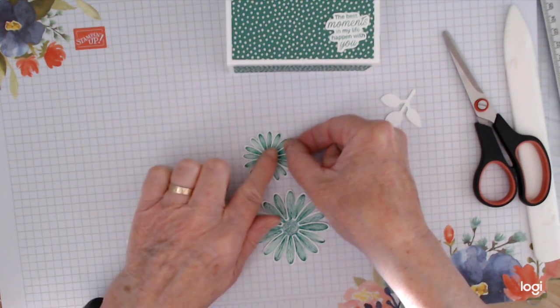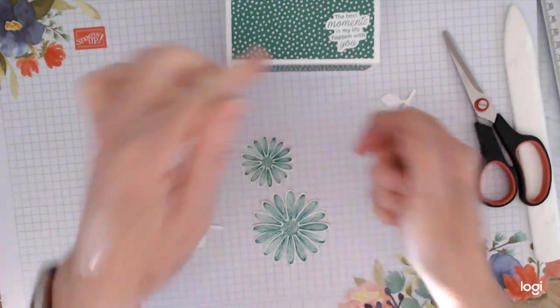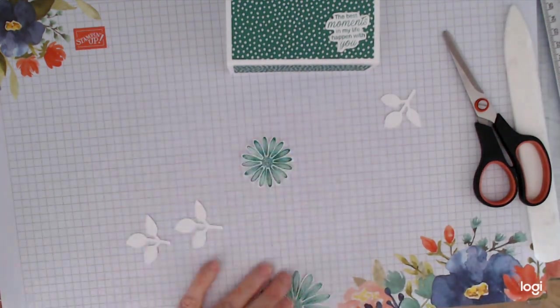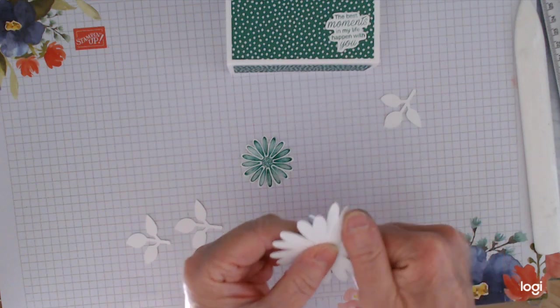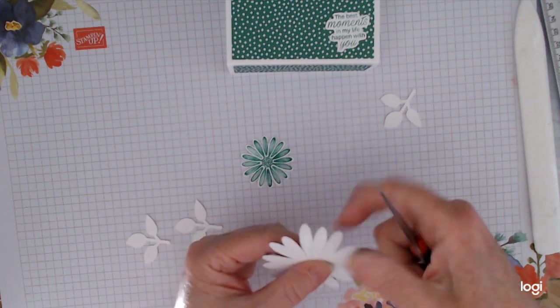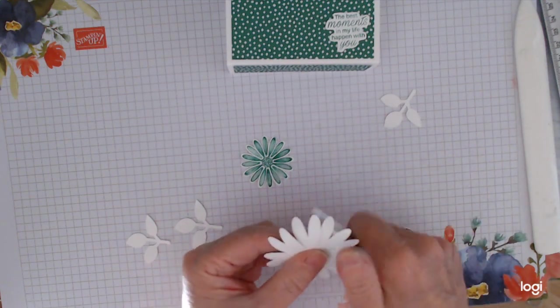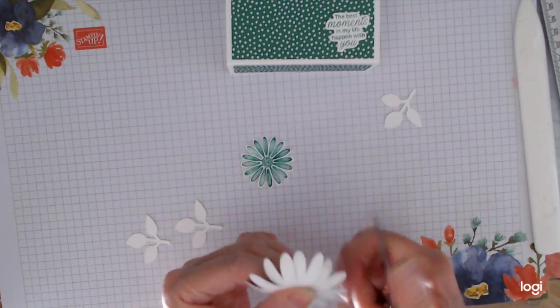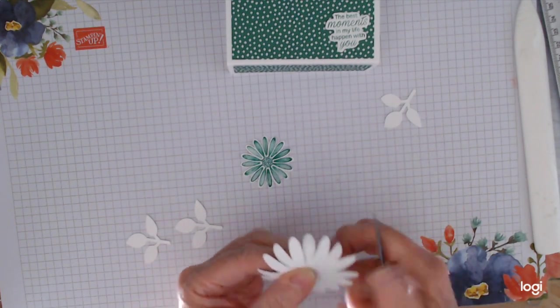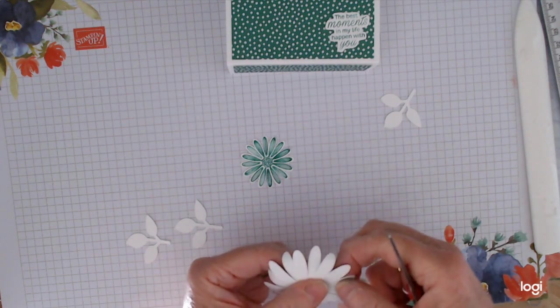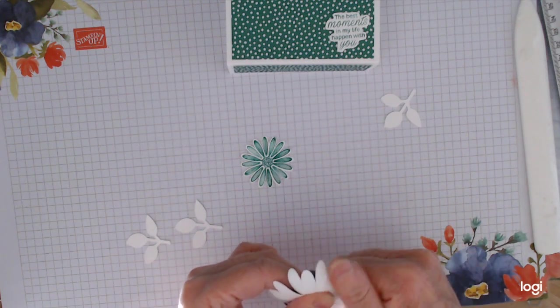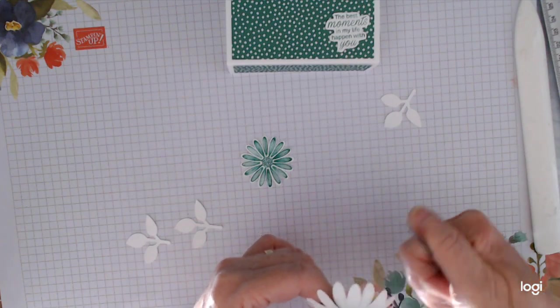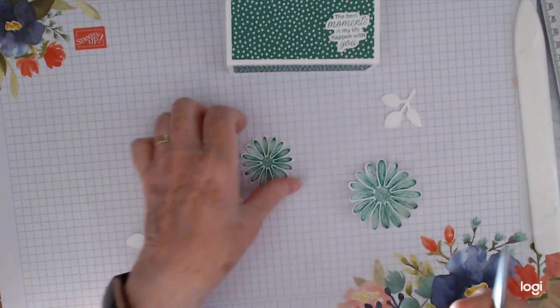Set the other one on top so that you're getting it central. Same here. Stagger them so that you're getting that nice layer. And when you think that's taken, turn it upside down and curl your leaves with your scissors or your bone folder.